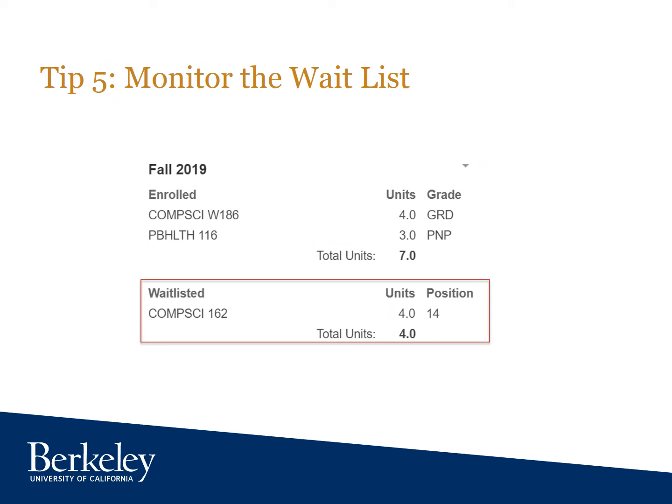Tip five: monitor the waitlist. Computer science classes are so impacted that the odds of you ending up on a waitlist at some point are pretty great. First, always have a backup plan. Don't worry about past experience if a class gets expanded — every semester the circumstances are different. There are no guarantees that the instructor will necessarily expand enrollment, so I strongly recommend you have a backup plan. If you need help making one, feel free to reach out to your advisor or a computer science advisor.